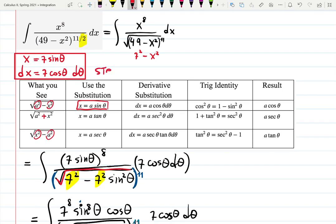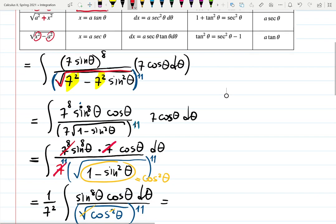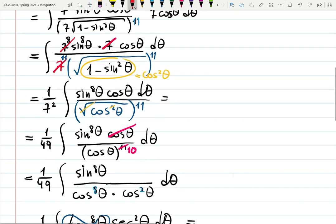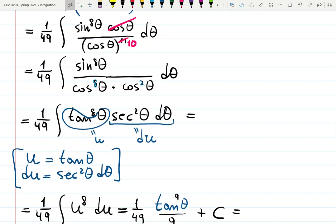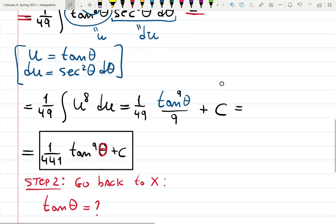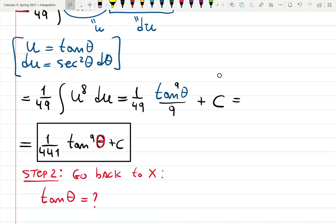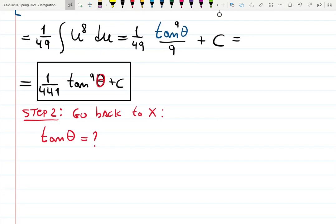Step 1 was perform the trig substitution. We chose it to be 7 sine theta, plugged 7 sine theta everywhere, simplified using trigonometric identities. 1 minus sine squared became cosine squared. Simplified more. Then at the very end we used u substitution with a different u this time. And then we got into the answer tangent to the 9 over 441. But what is tangent theta?